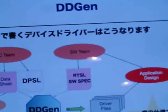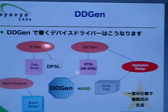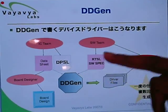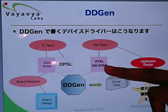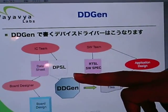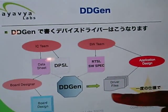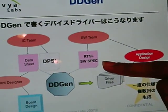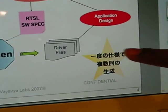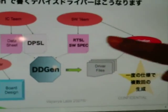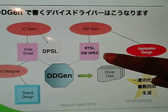I will be giving a presentation about our tool called DDGen, Device Driver Generator. DDGen takes two input files: DPSL (Device Programming Sequence Language) and RTSL (Runtime Specification Language). Using these two files as input, DDGen generates device drivers. Based on the RTSL, we generate drivers multiple times. DPSL is written only once, and for different operating systems we write different RTSL files.